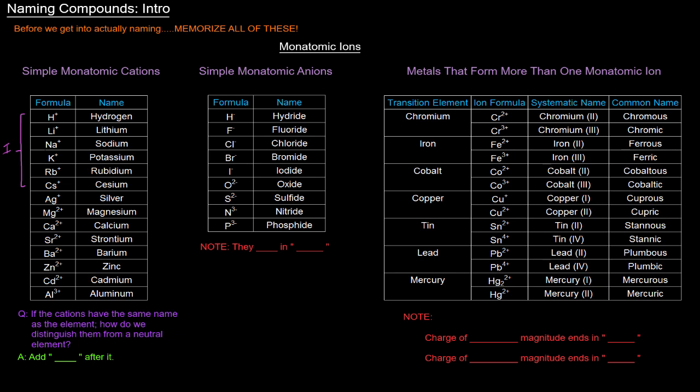They have one extra electron that if they lose, noble gas configuration. Except hydrogen, it loses that electron, then it has no electrons at all. In addition, Ag+, a transition metal, forms a plus one ion. So that is silver ion.